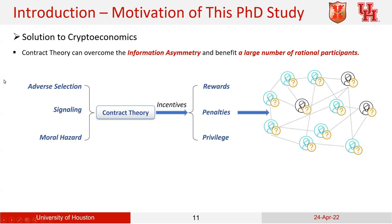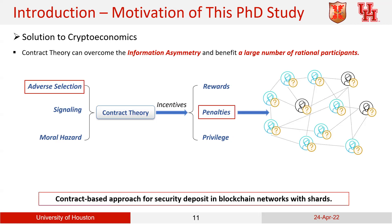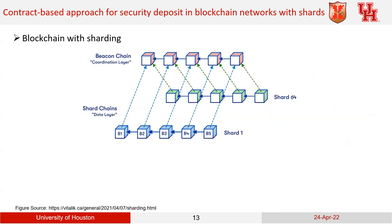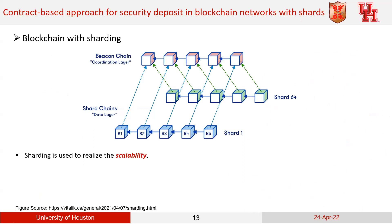I first list the major models introduced previously and the major incentive issues in crypto economics. The first work uses the adverse selection model to deal with the penalty issue in the crypto economics context. The title is 'A Contract-Based Approach for the Security Deposit in Blockchain Network with Sharding.' I would like to introduce the background of this work — a very important concept called sharding.